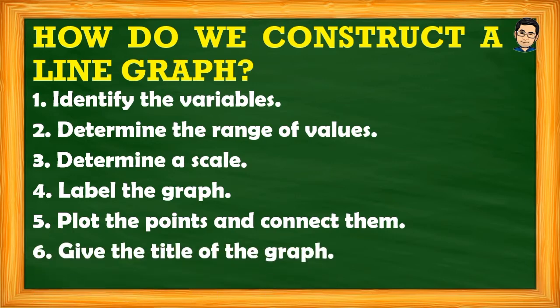Finally, give the graph a title. When making a line graph, it is important to add a title. For example, if we are recording temperature in one week, the title could be 'Daily Recorded Temperature for Seven Days.' For population, it could be 'Population of Barangay San Pedro from 2010 to 2020.' The title must be appropriate and match the given data — do not use a title that does not suit the data.